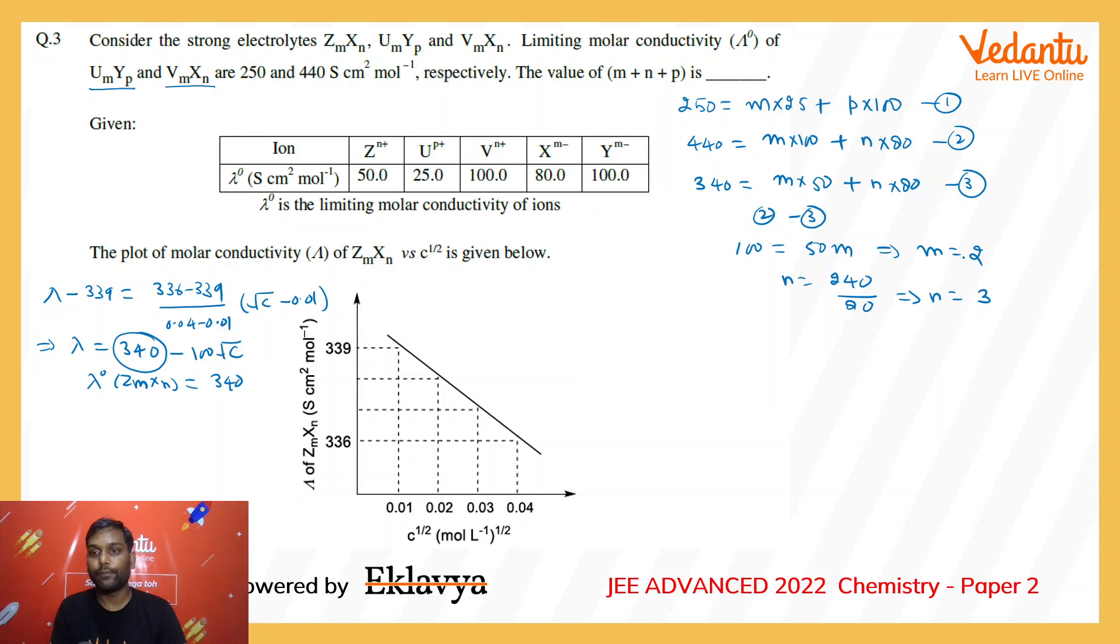From the first equation, I can find P by putting M = 2. So 250 - 50 = 200, divided by 100, so P = 2. Therefore, M = 2, N = 3, P = 2, and the sum M + N + P = 2 + 3 + 2 = 7. The correct answer is 7.